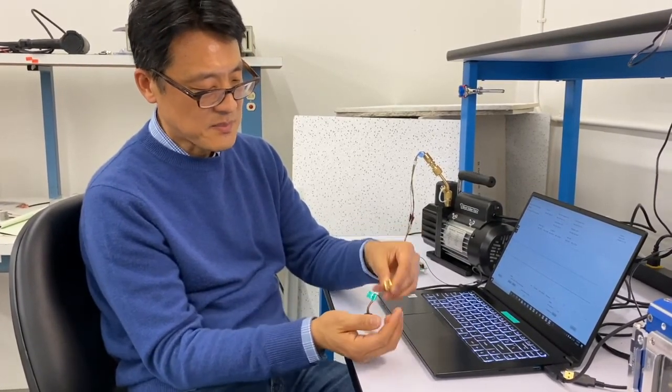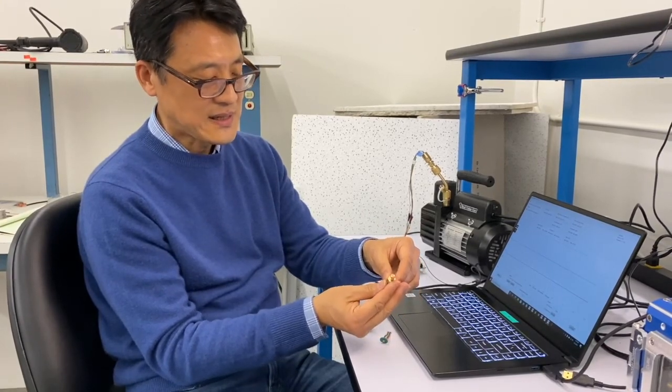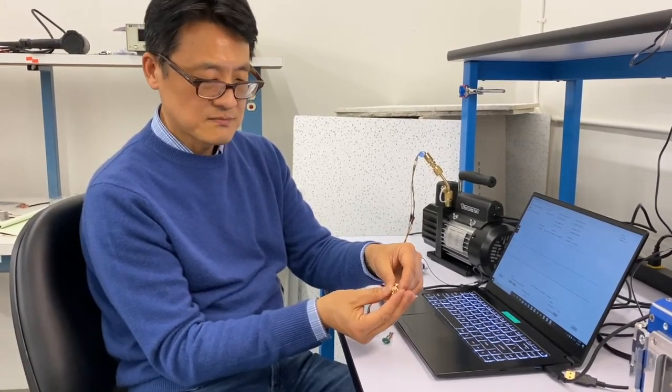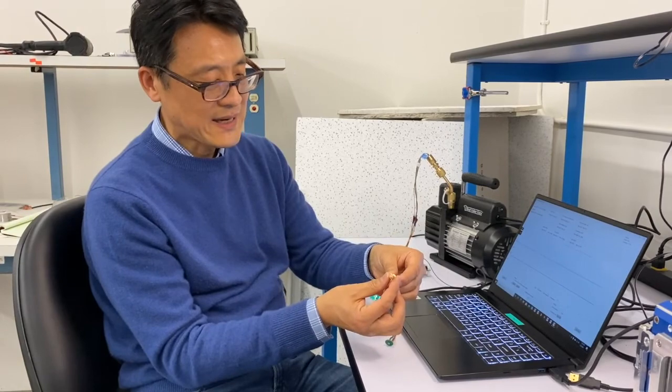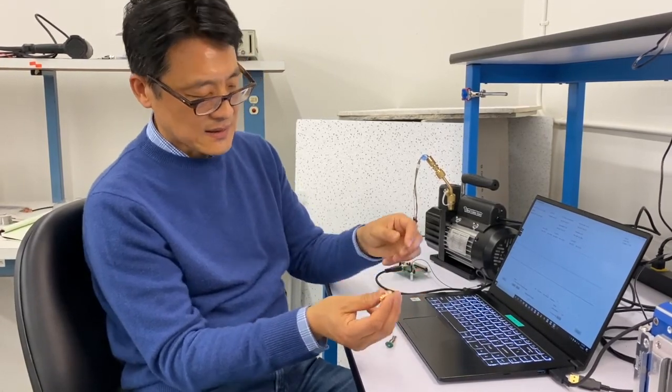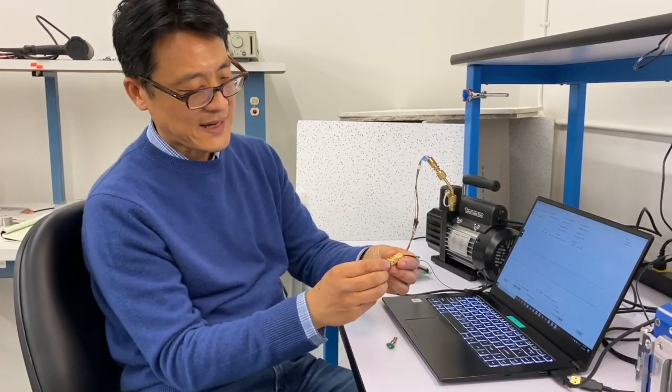To clean it, you just take out the adapter and immerse it in mineral spirit cleaning solution for 10 to 20 minutes. Take it out, dry it, and thread it back in, and it can be reused again.